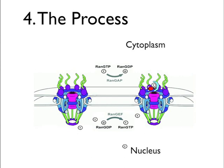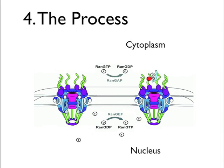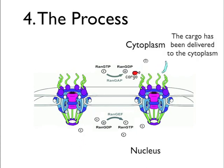Once the exportin-cargo-RAN-GTP complex is on the cytosolic side of the nuclear pore complex, it moves into close proximity with the RAN-GTPase activating protein, RAN-GAP, which is associated with the cytosolic extensions. This triggers hydrolysis of GTP by RAN, and once RAN hydrolyzes GTP, the whole complex falls apart, because CRM1 can only hold the cargo when associated with RAN-GTP. The cargo is thus effectively delivered to the cytosolic side.